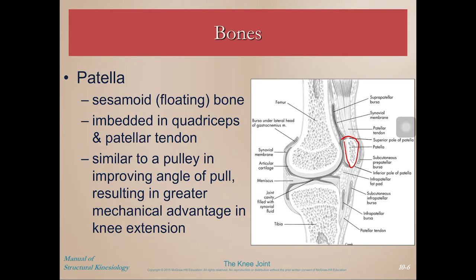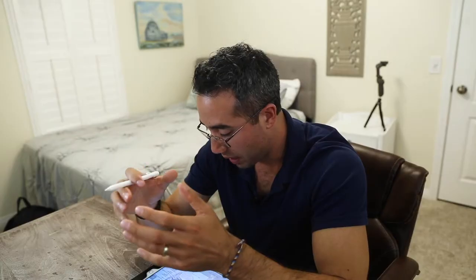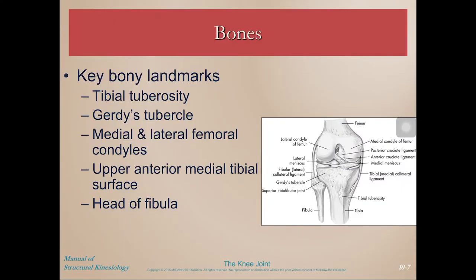The patella arises in the middle of the patellar tendon and serves to increase the mechanical advantage of the pulley mechanism of your quadriceps muscles, resulting in greater mechanical advantage during extension. It does this by increasing the moment arm of the patellar tendon. When calculating mechanical advantage for a lever, we look at the ratio of the moment arm of the muscle force versus the moment arm of the resistive force, and just by having the patella in the patellar tendon, it increases the mechanical advantage of the quadriceps ever so slightly.